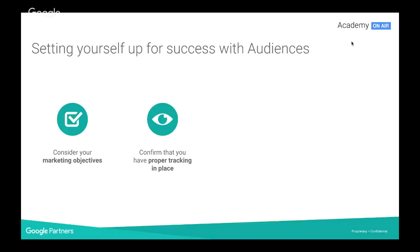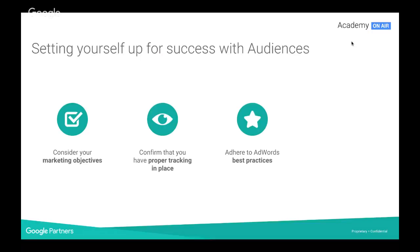And then attribution — at the moment this is available just for search. You should be leveraging the non-last-click attribution model to value each touch point along your customer journey. If it's available for your conversion, we absolutely recommend using data-driven attribution. Third, adhere to AdWords best practices. Audience solutions work best when applied to campaigns and ad groups that follow AdWords best practices. These items are not prerequisites — you'd still be able to use audience solutions — but we really recommend that you follow best practices.